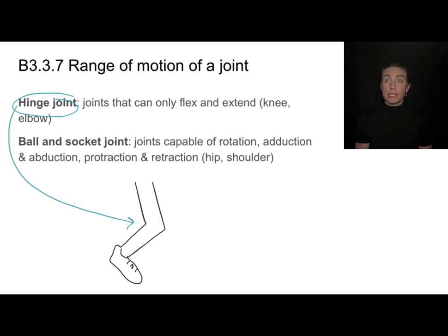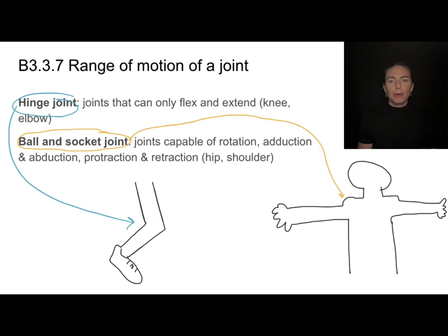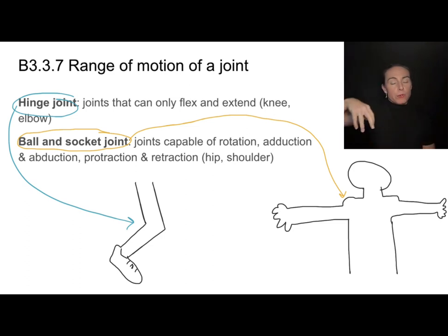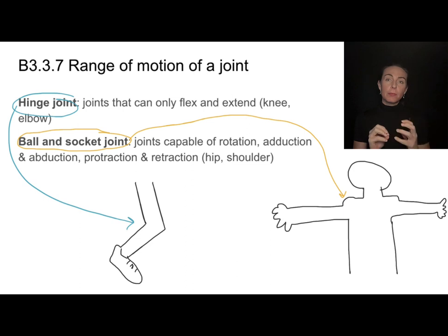That's going to be different from a ball and socket joint. We find these in places like our shoulder or our hip. When I think about how I can move my shoulder, I can do lots of things — rotation, adduction, abduction, protraction, retraction. There's a much wider range of motion. It's not as stable, so we need more stabilizing features like ligaments, but it's a very different type of joint that allows for a different range of motion.